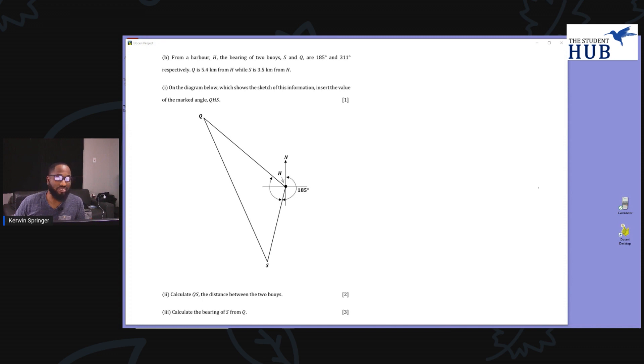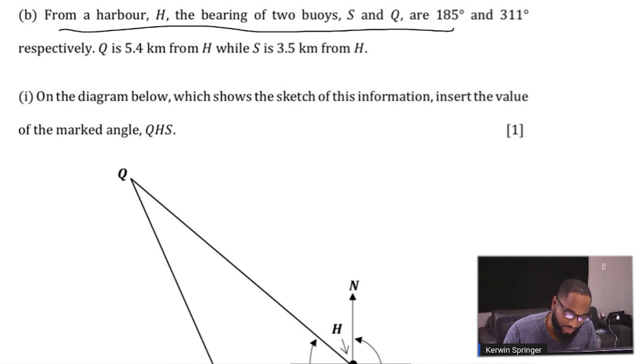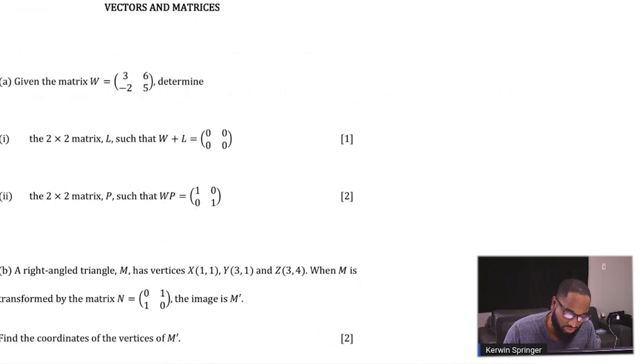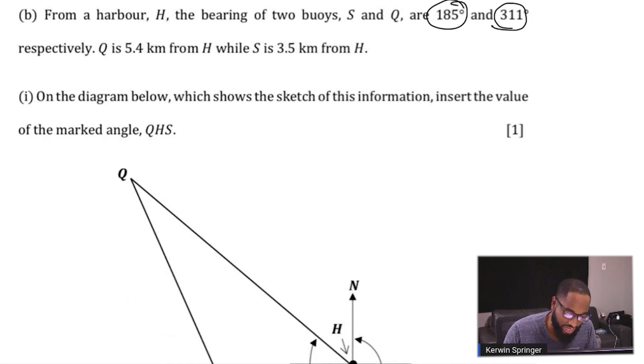It's a challenge, the bearings question. So let's jump into it. From a harbor H, the bearing of two buoys S and Q are 185 degrees and 311 degrees respectively. Q is 5.4 kilometers and S is 3.5 kilometers from H. The question asks to show a sketch of this information and find the value of the marked angle QHS. I'm sensing that sine and cosine rule are going to come in here.